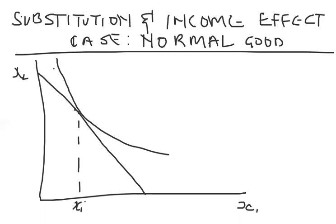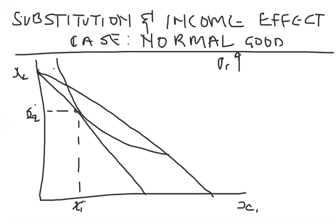This is my optimal x1 and my optimal x2. Now suppose there is a fall in price one. When price one falls, what happens to the budget constraint? It is going to pivot on its intercept — the x2 intercept remains constant, however that of x1 moves outward.